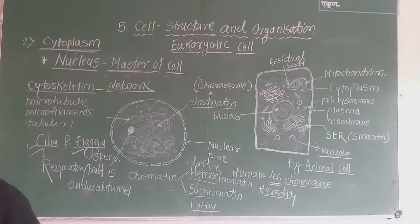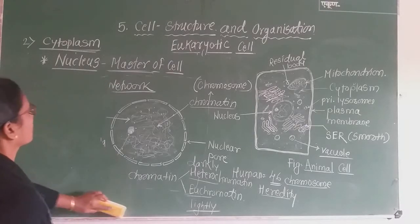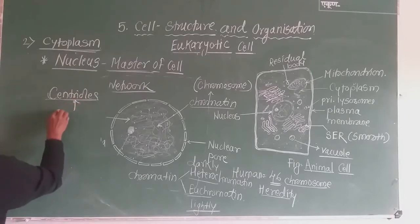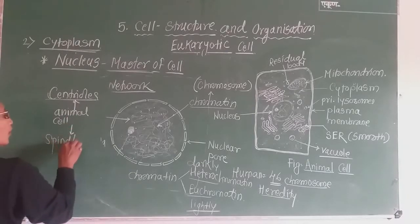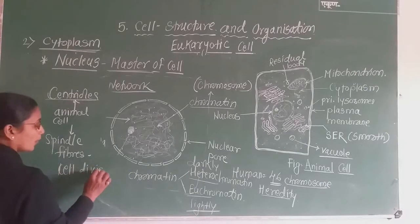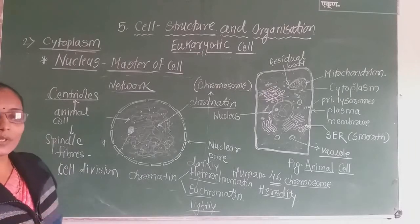Along with this, in the case of animal cells, centrioles are present. These centrioles are present only in animal cells. Their importance is that they form spindle fibres during the process of cell division. This will be more clear in the chapter on cell division.